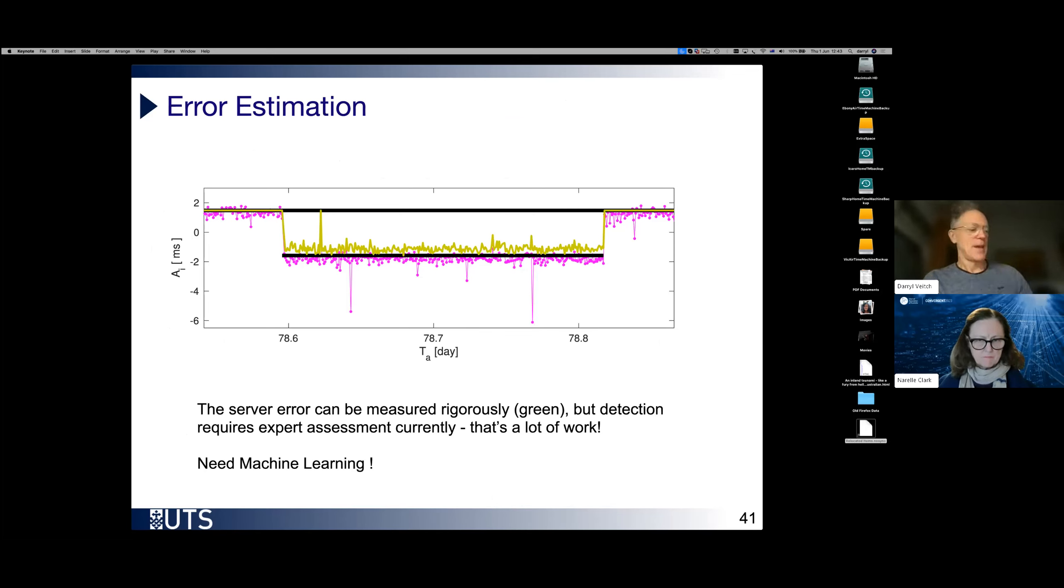Error estimation, how does that work? We have a rigorous method to measure that, which took quite a long time to develop. However, the detection itself, that disambiguation of am I looking at an error? Am I looking at something in the path? That can be very complicated. And we haven't yet got a method I'd be happy with that's automated that can do that. There's a lot of manual work involved in isolating these server anomalies at the moment. And this is part of the direction for future work is to automate the whole thing. It's not easy.